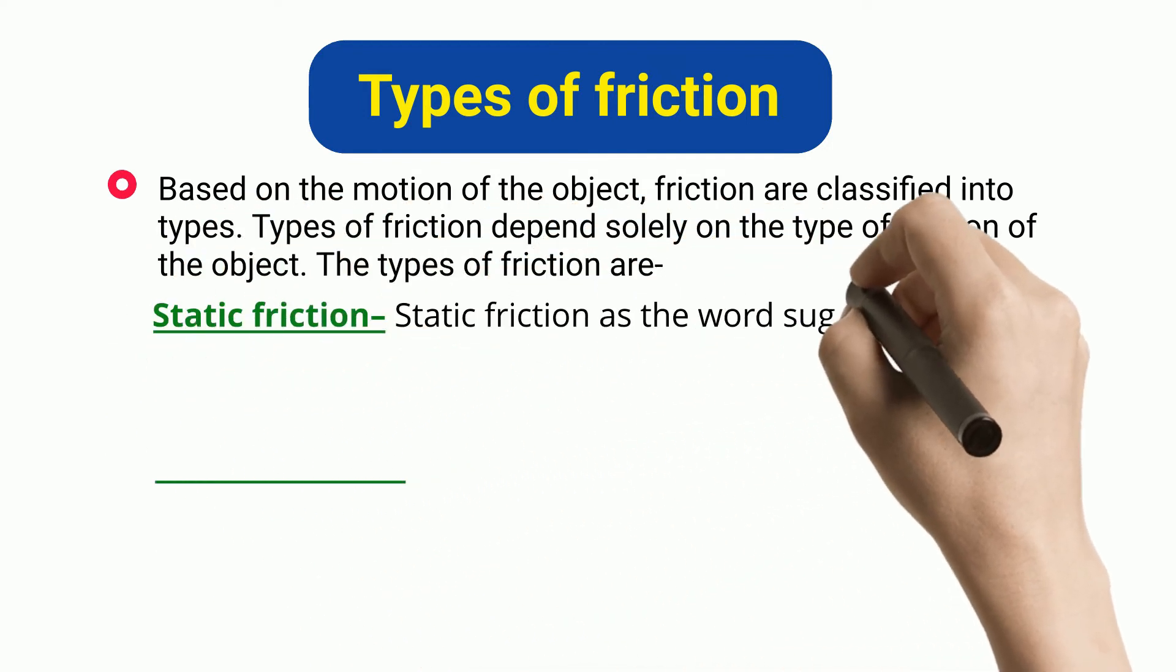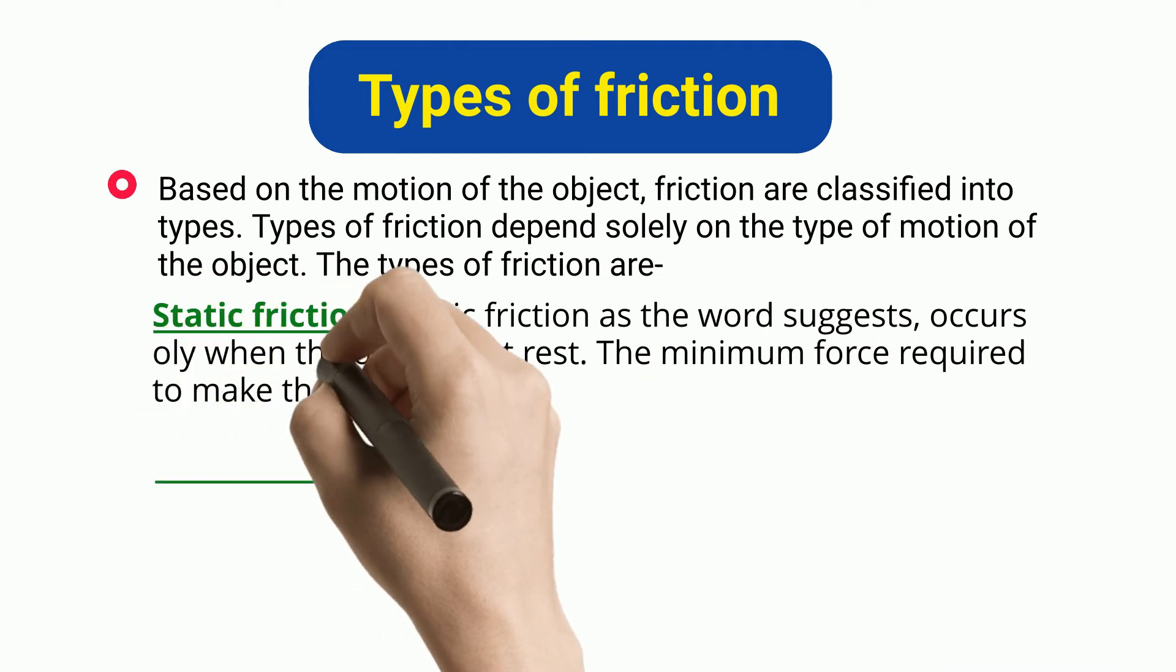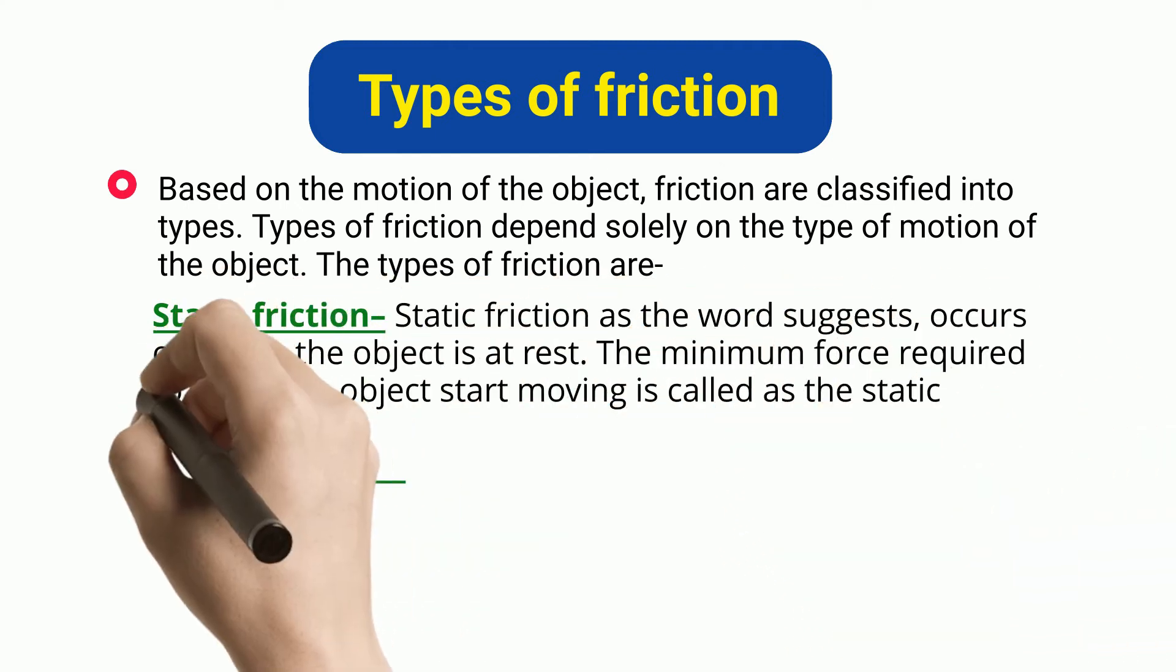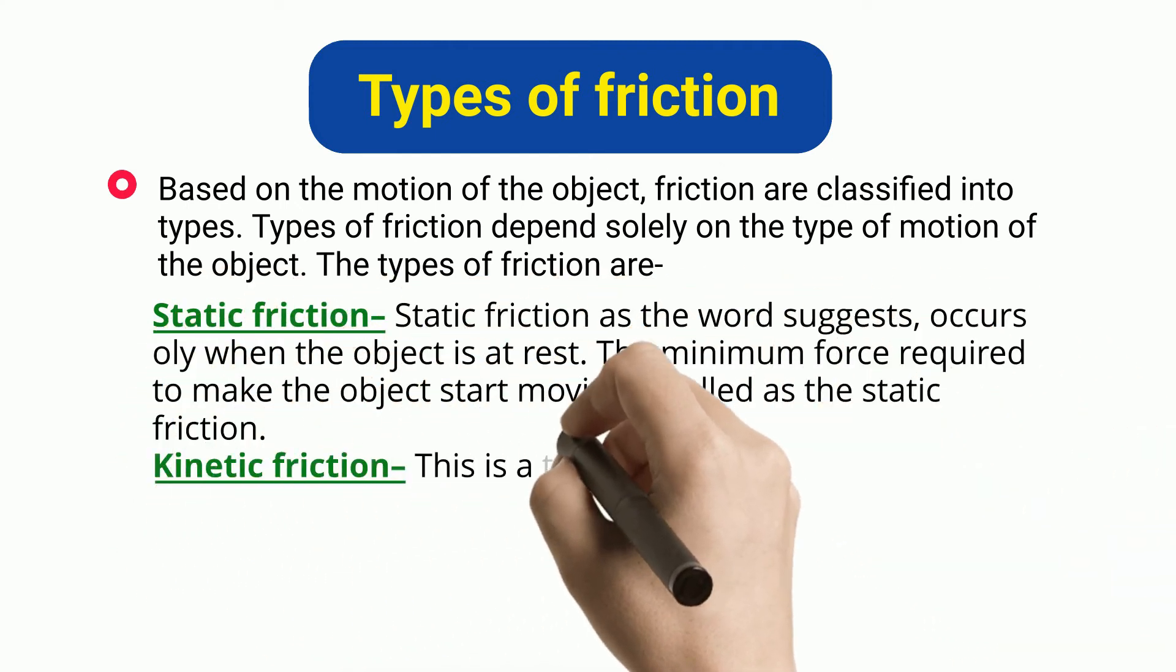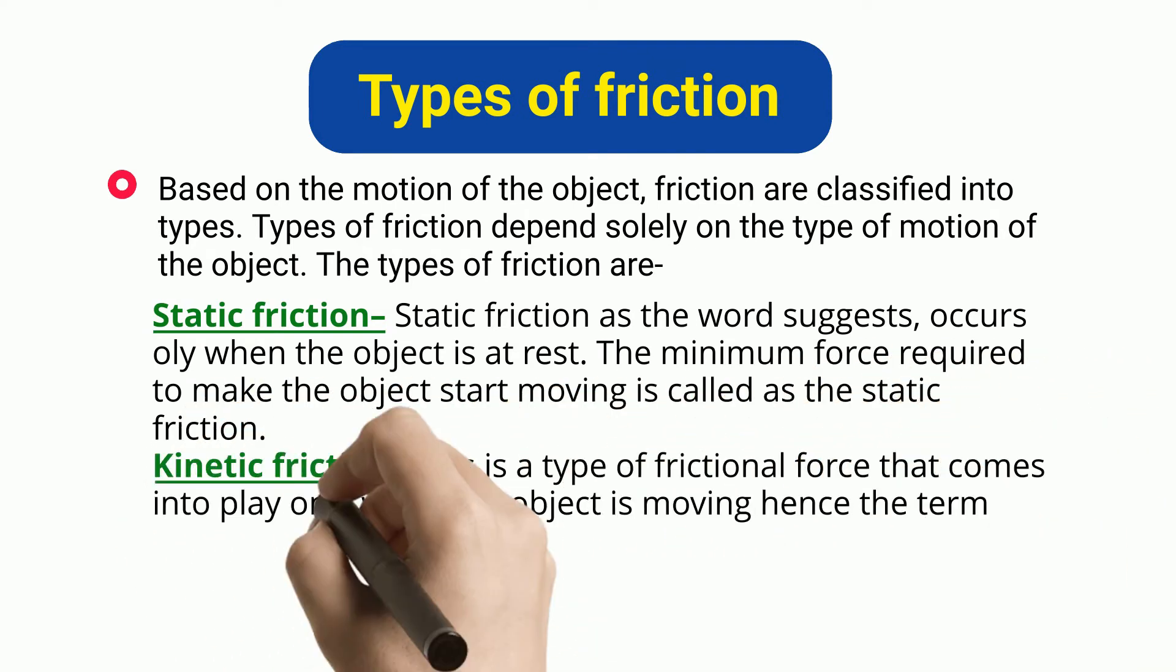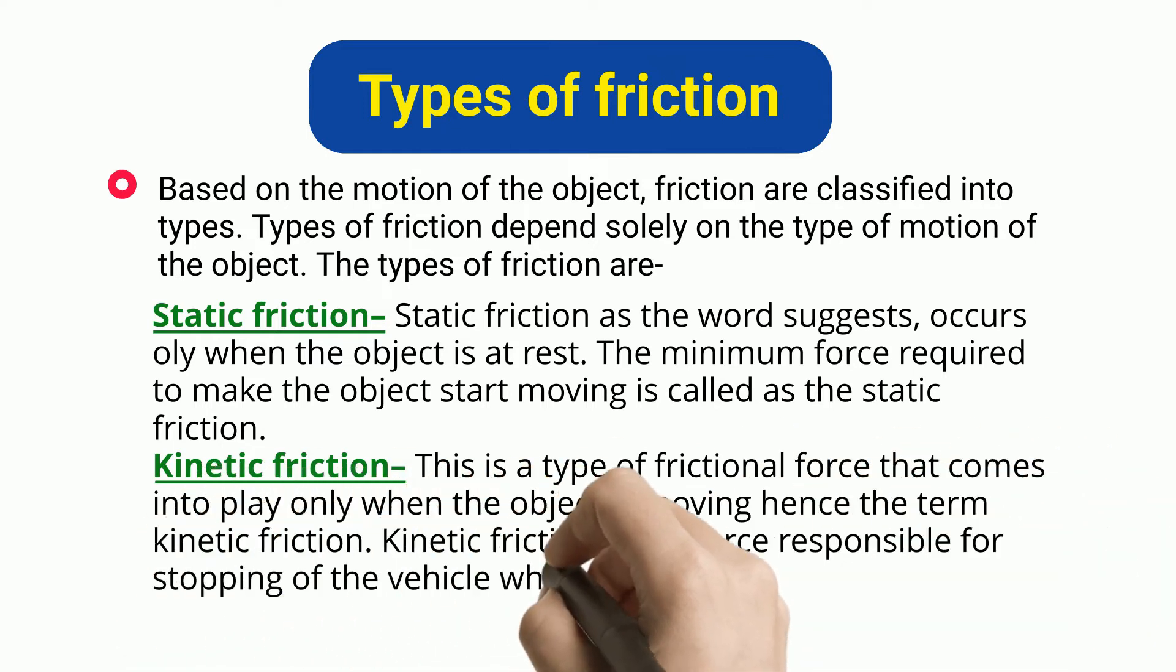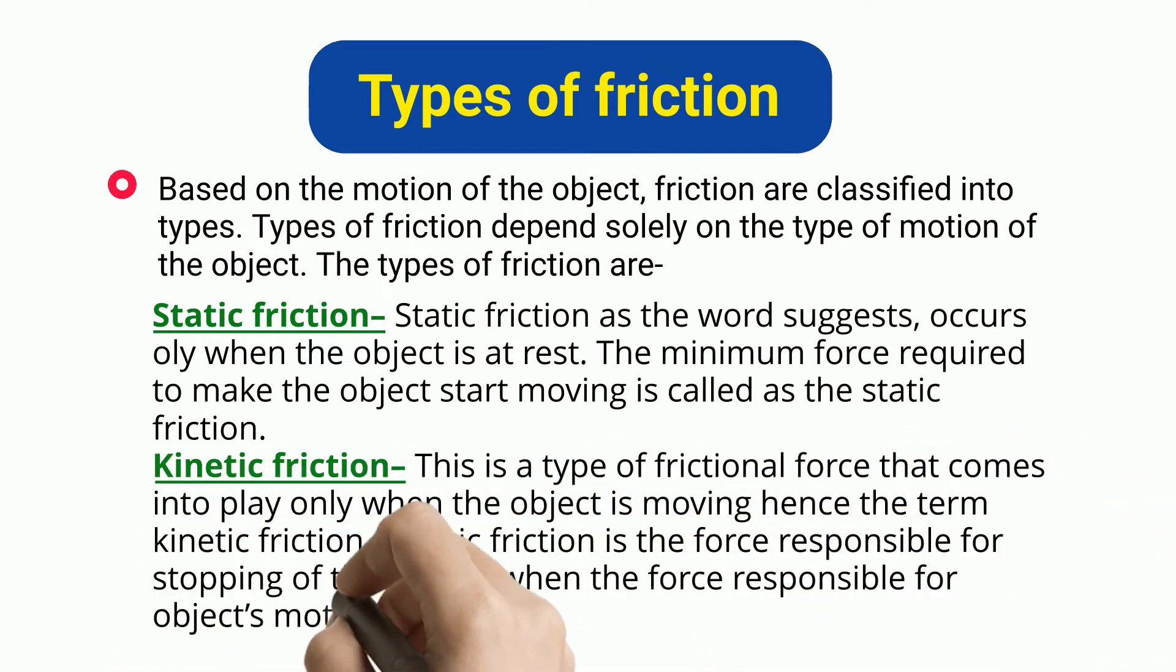The types of friction are: Static friction - as the word suggests, occurs only when the object is at rest. The minimum force required to make the object start moving is called static friction. Kinetic friction - this is a type of frictional force that comes into play only when the object is moving. Kinetic friction is the force responsible for stopping of the vehicle when the force responsible for object's motion is lifted.